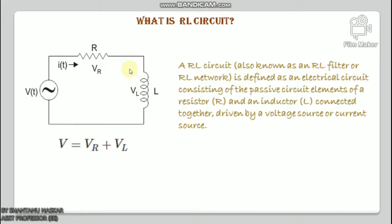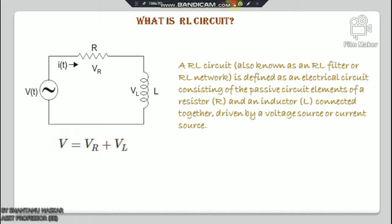Consider a simple RL circuit in which resistor R and inductor L are connected in series with a voltage supply V in volts. Let the current flowing in the circuit be I in amperes, and current through resistor and inductor be IR and IL respectively. Since both resistance and inductor are connected in series, the current in both elements remains the same: IR = IL = I. Let VR and VL be the voltage drops across the resistor and inductor. Applying Kirchhoff's voltage law, the sum of voltage drops must equal the applied voltage: V = VR + VL.